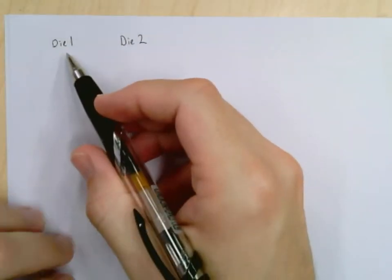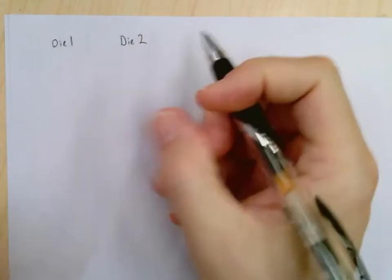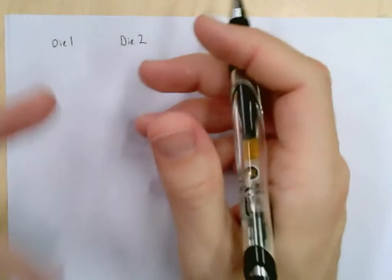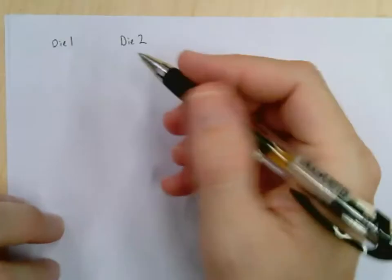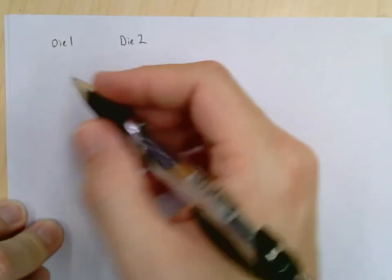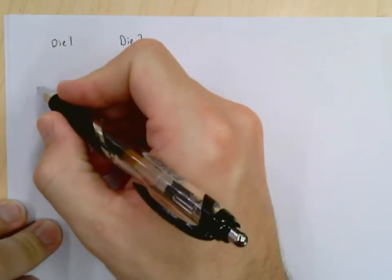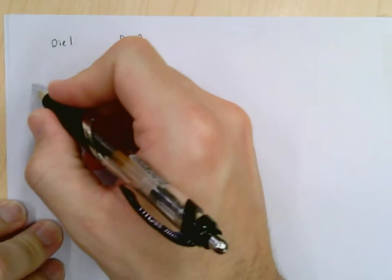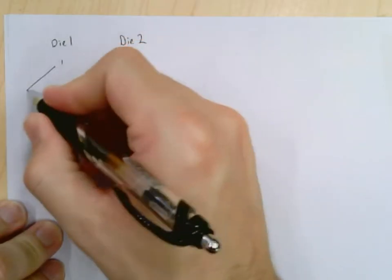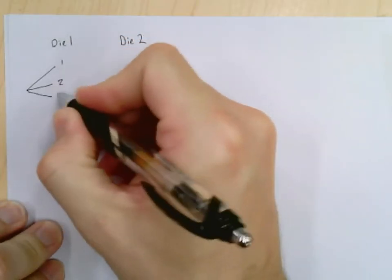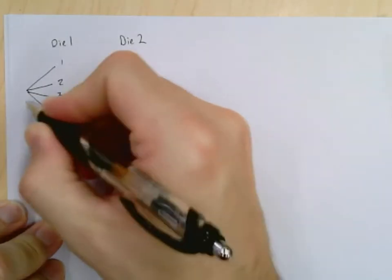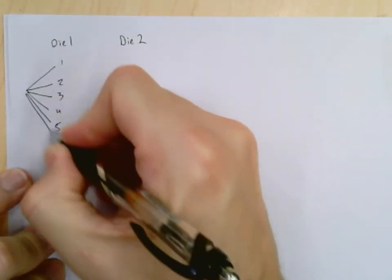We talked about in class the situation where we have two dice. We're going to roll the two dice. We want to know the outcomes, the probabilities, things like that. Well, we talked about that we could use a tree diagram. We could say, on die one, I could get a one, or two, or three, or four, or five, or six.